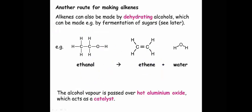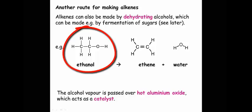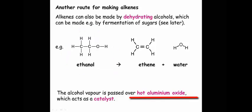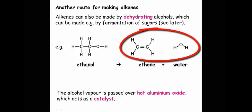There is one further reaction of ethanol that we must know about: the dehydration of ethanol to make ethene. Ethanol in its gaseous state, when passed over a hot aluminium oxide catalyst, will be dehydrated to form ethene gas and water.